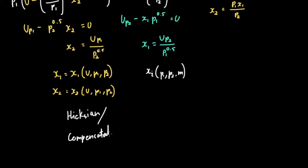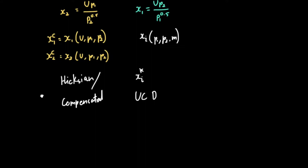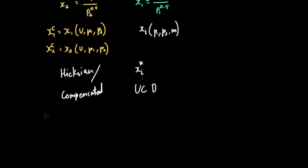These two quantities, since they're called our compensated demand, are denoted by a letter C as a superscript. If it was our uncompensated demand, the optimal quantities of good I would have a star. But in our compensated demand, our optimal quantities would have a superscript of C. When we substitute this into our expenditure, we find what we call our expenditure function. The expenditure function uses our Hicksian demand, and is denoted E prime. So E prime equals P1 times X1C plus P2 times X2C, where X1C and X2C are functions of U, P1, and P2.